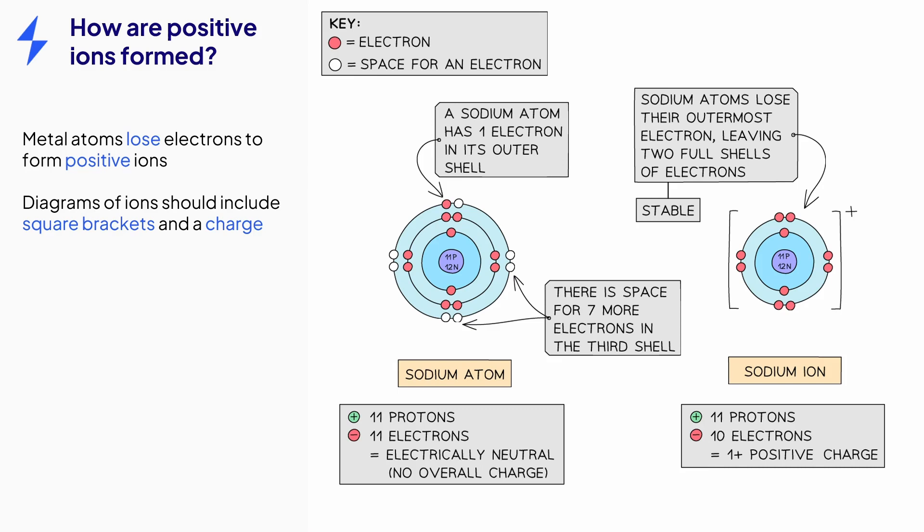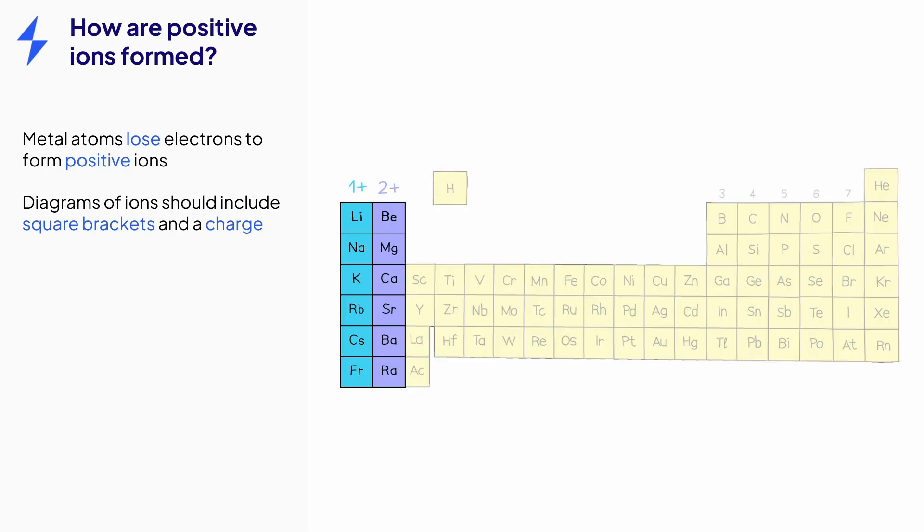When other metal ions are formed, the size of the charge depends on how many electrons the metal atom has lost, and we can use the group number of the metal to help us determine the charge. Group 1 elements lose 1 electron, so form an ion with a 1 plus charge. Group 2 elements, such as magnesium, lose 2 electrons, so form an ion with a 2 plus charge, and so on.